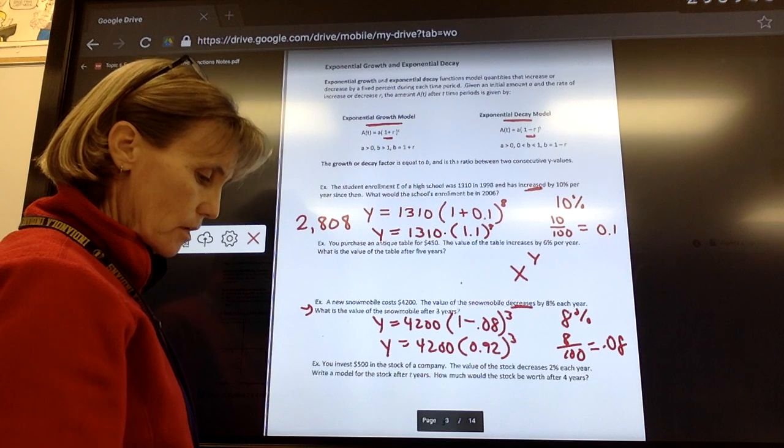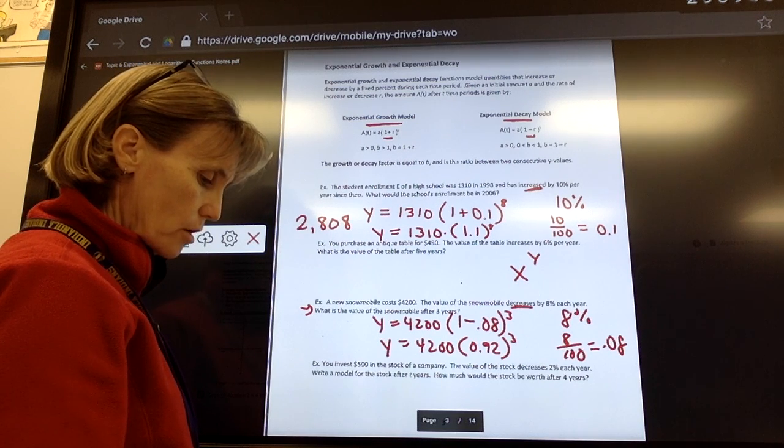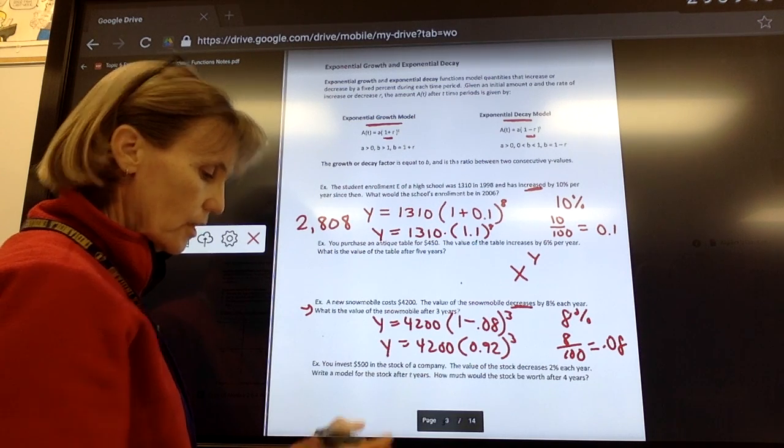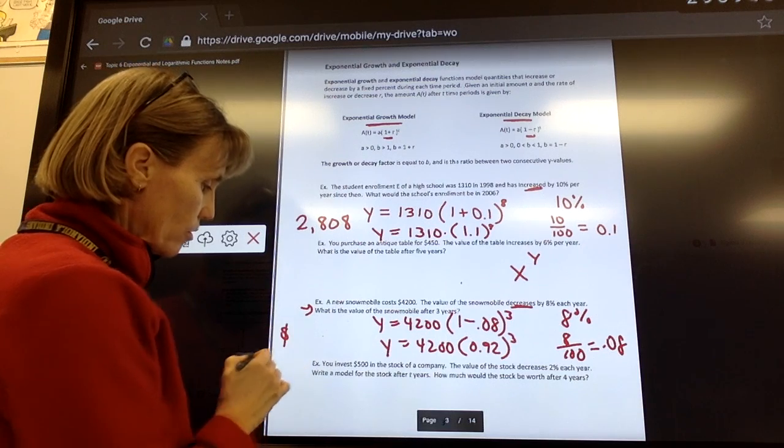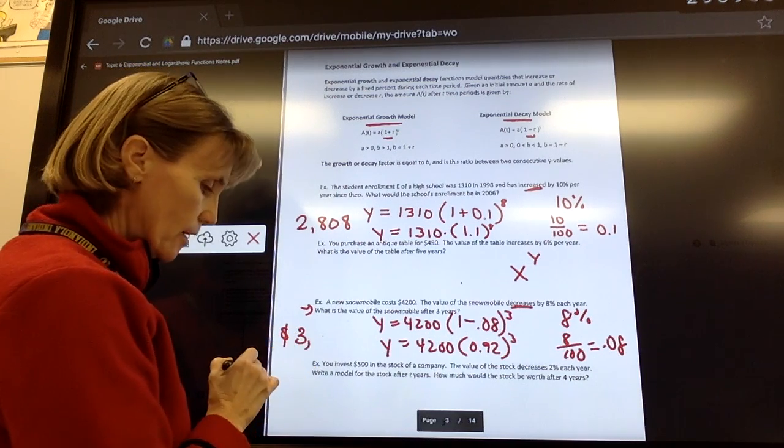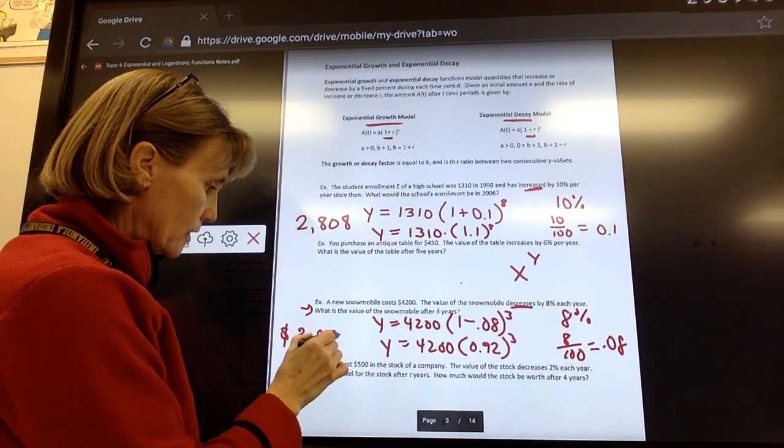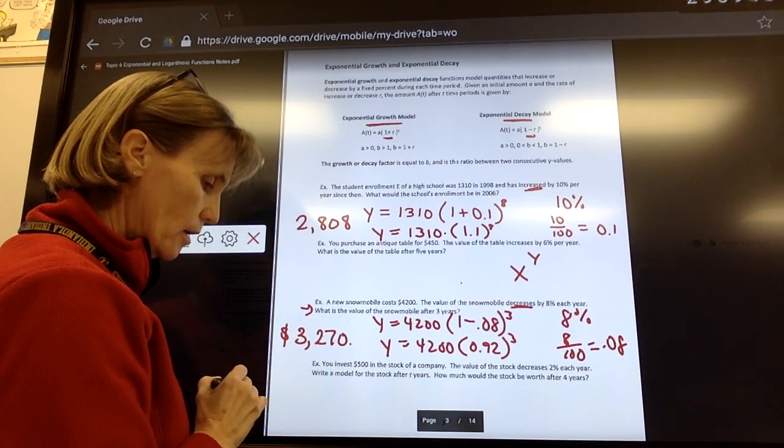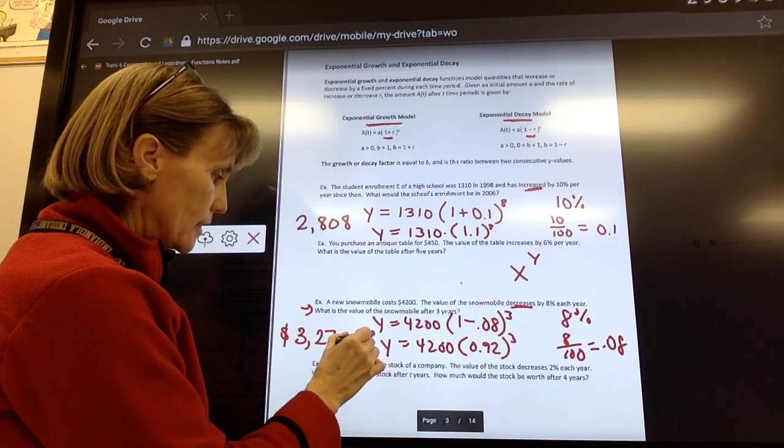Just hit times, and then put in your $4,200. Hit equals. Now we're going to round it. The value of that snowmobile is now $3,270, and I'm going to say 49 cents.